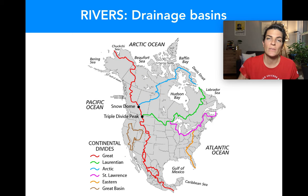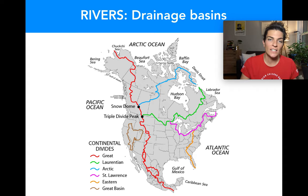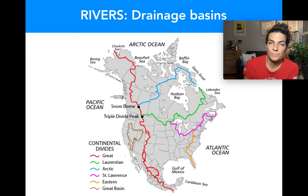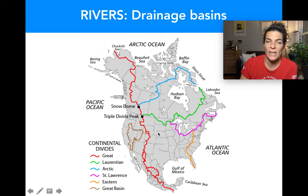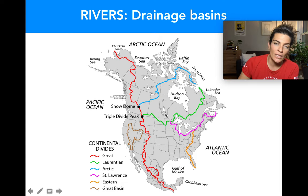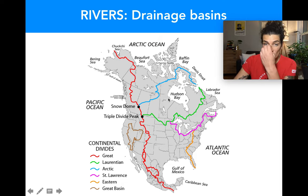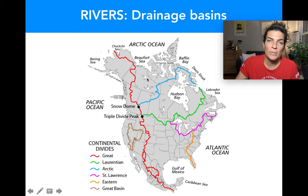Zooming into North America, the continent divides into several drainage basins. Everything east of the red line, south of the green and pink line, and west of the orange line drains into the Gulf of Mexico — the Mississippi River is a major contributor. Other basins drain into Hudson Bay, the Gulf of St. Lawrence, the Atlantic, Pacific, and Arctic Oceans. The lines between basins are called divides, and at continental scale these are called continental divides.